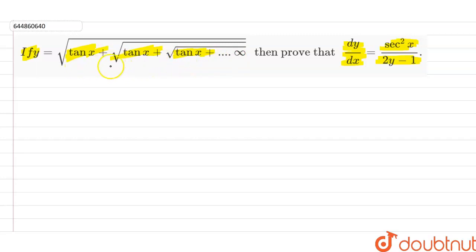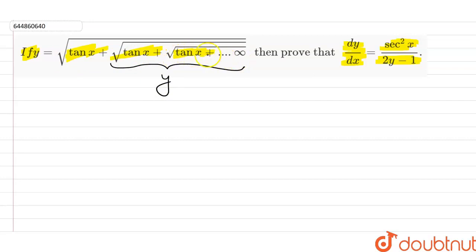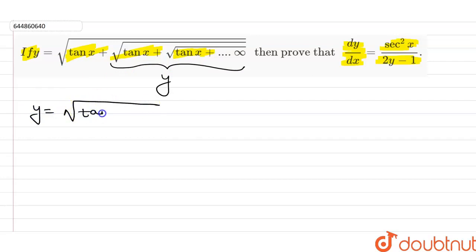If I observe, then I get that this inner part is also equal to y, because y is the square root of tan x plus the square root of tan x plus the square root of tan x, and after the plus sign this value keeps repeating. So I can write y is equal to the square root of tan x plus y.